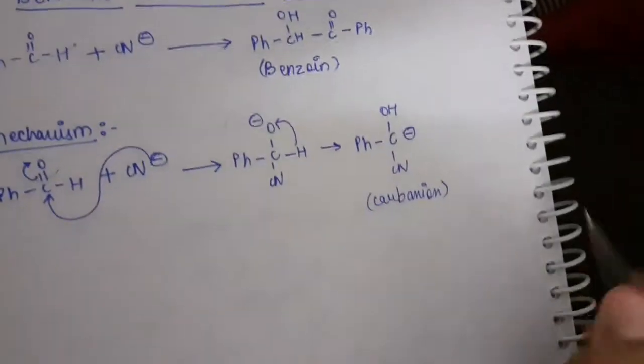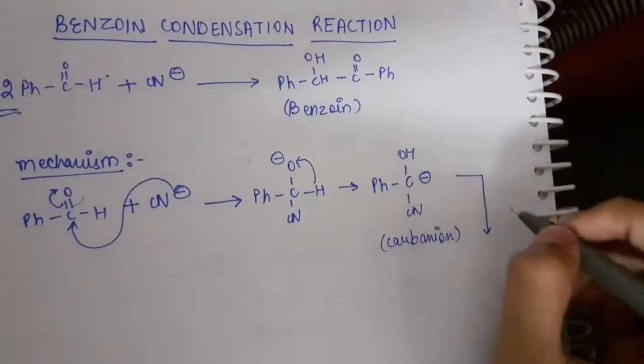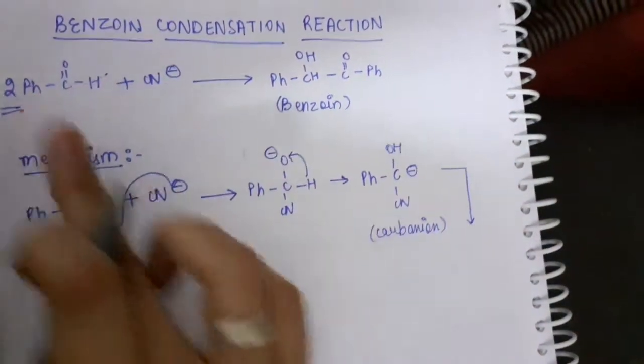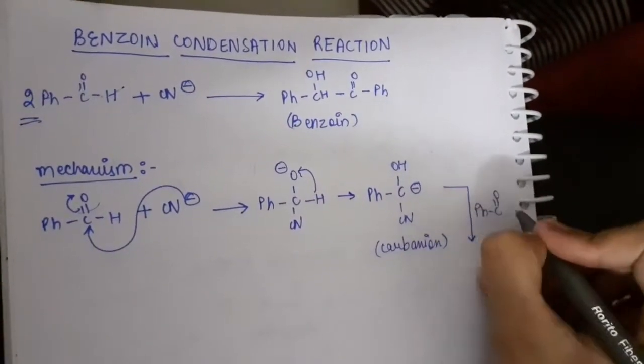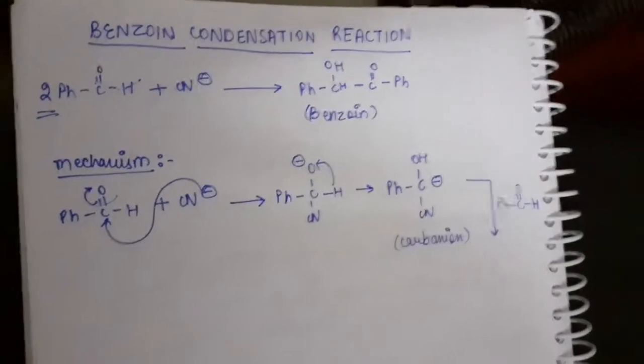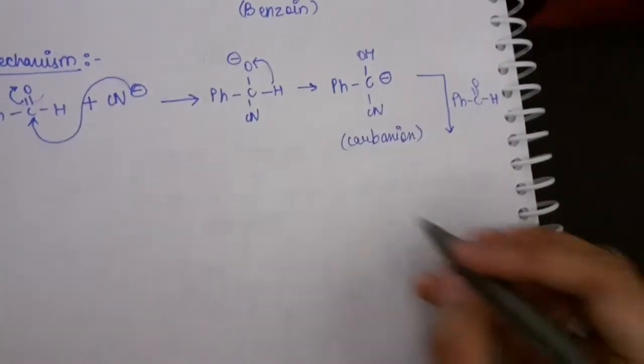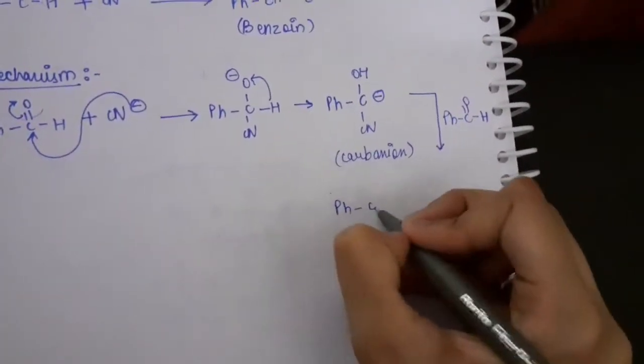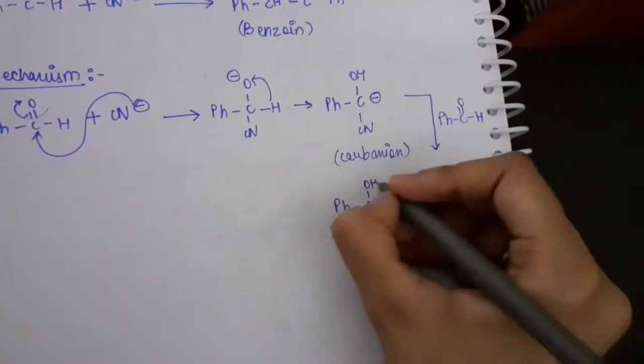There is a formation of a carbanion. Now after the formation of carbanion, there is another step in which we have used one mole here - we are left with another mole which we use here. In this step, we add one mole of benzaldehyde. What actually happens is that it would get attached to the carbon with the negative charge we already have.